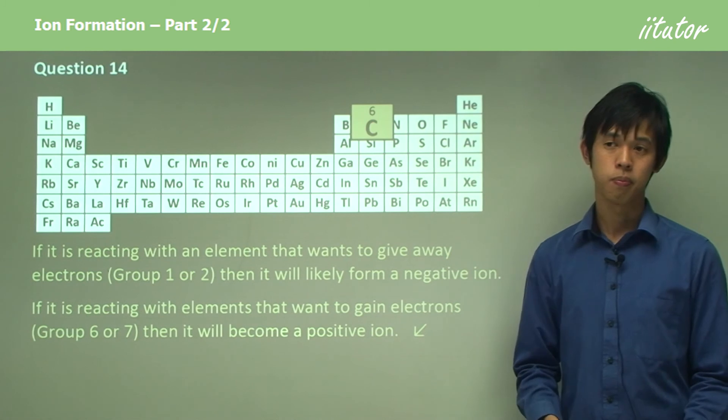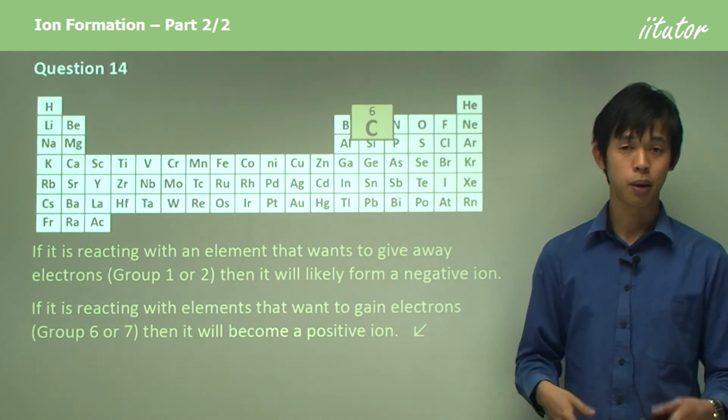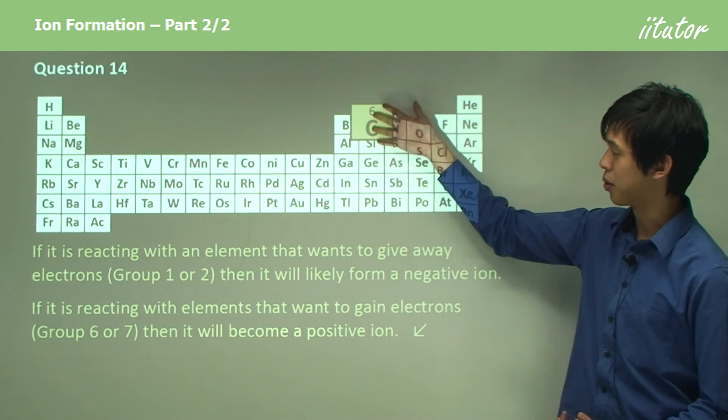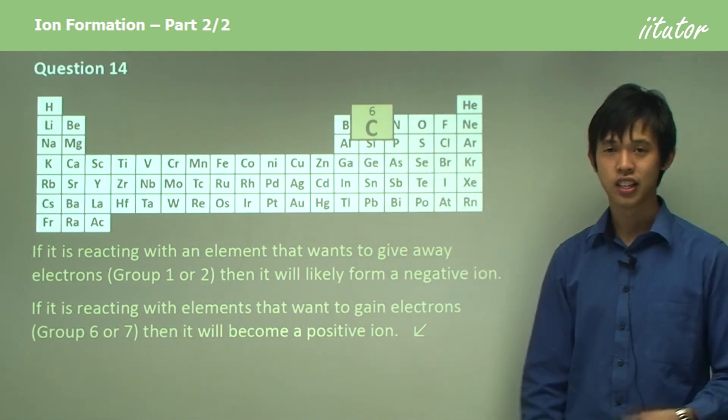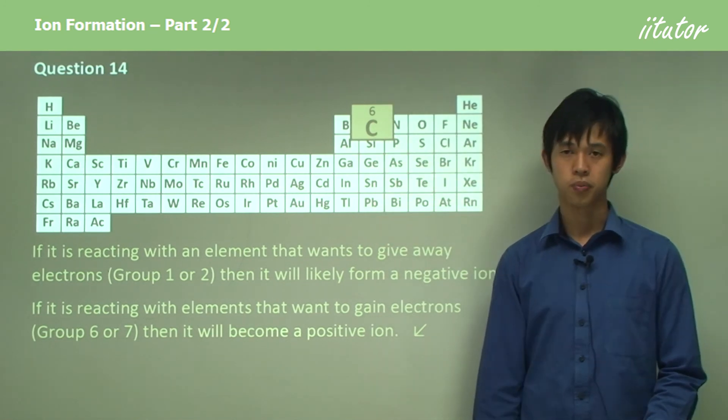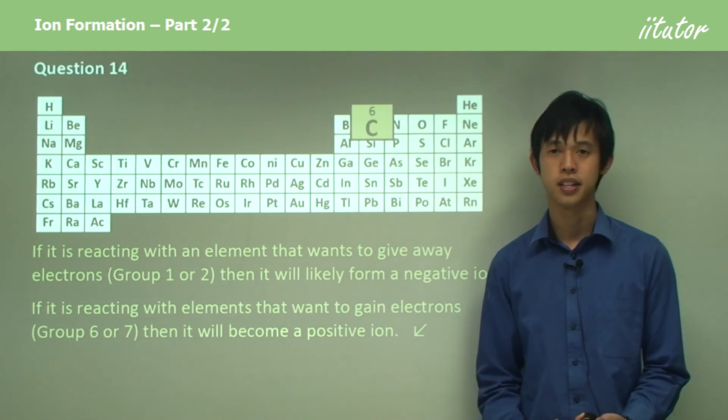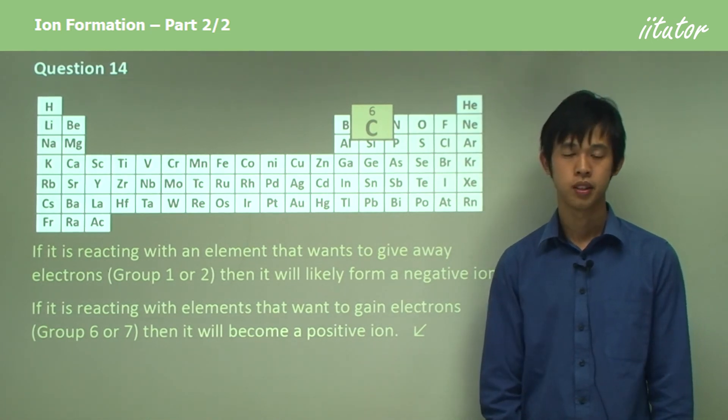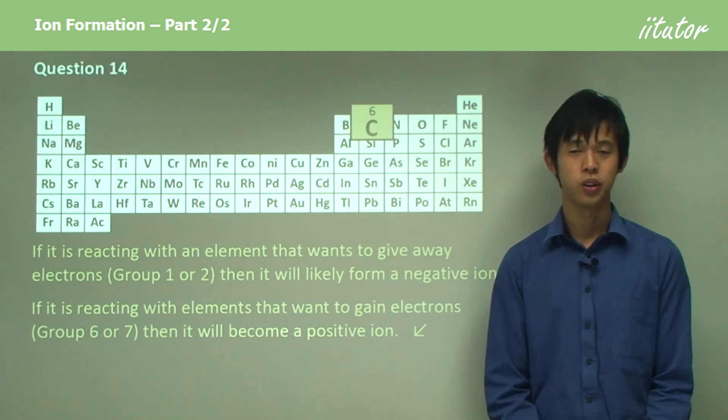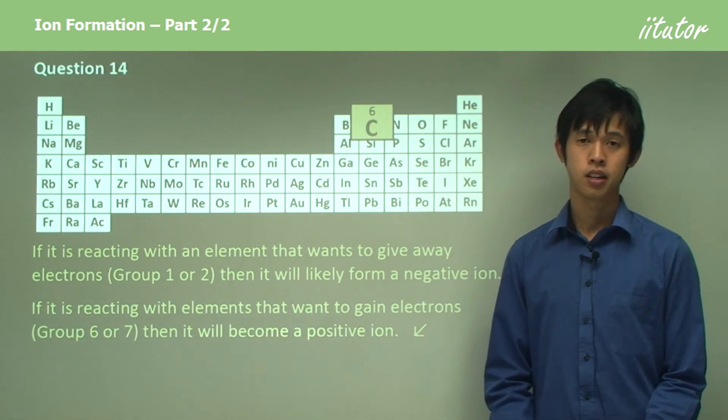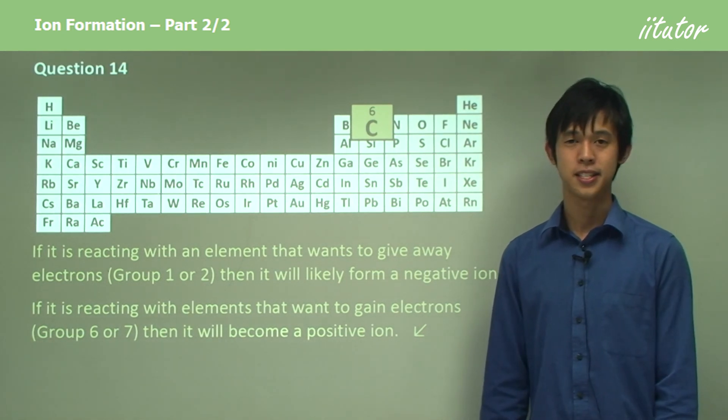It depends very strongly on what type of element the carbon is reacting with. It's the same for all of these going down. It's just a very interesting case where we have equal numbers on both sides. That concludes today's lesson on ion formation. We looked at why ions form and how they can be used to achieve stability.